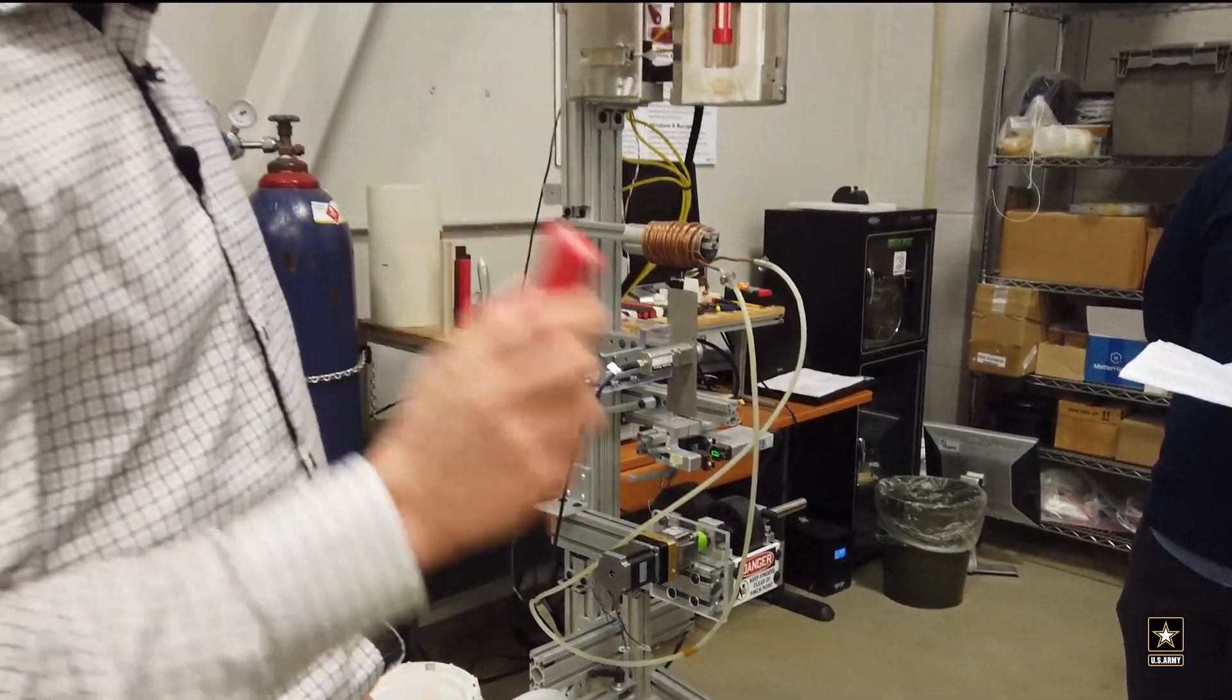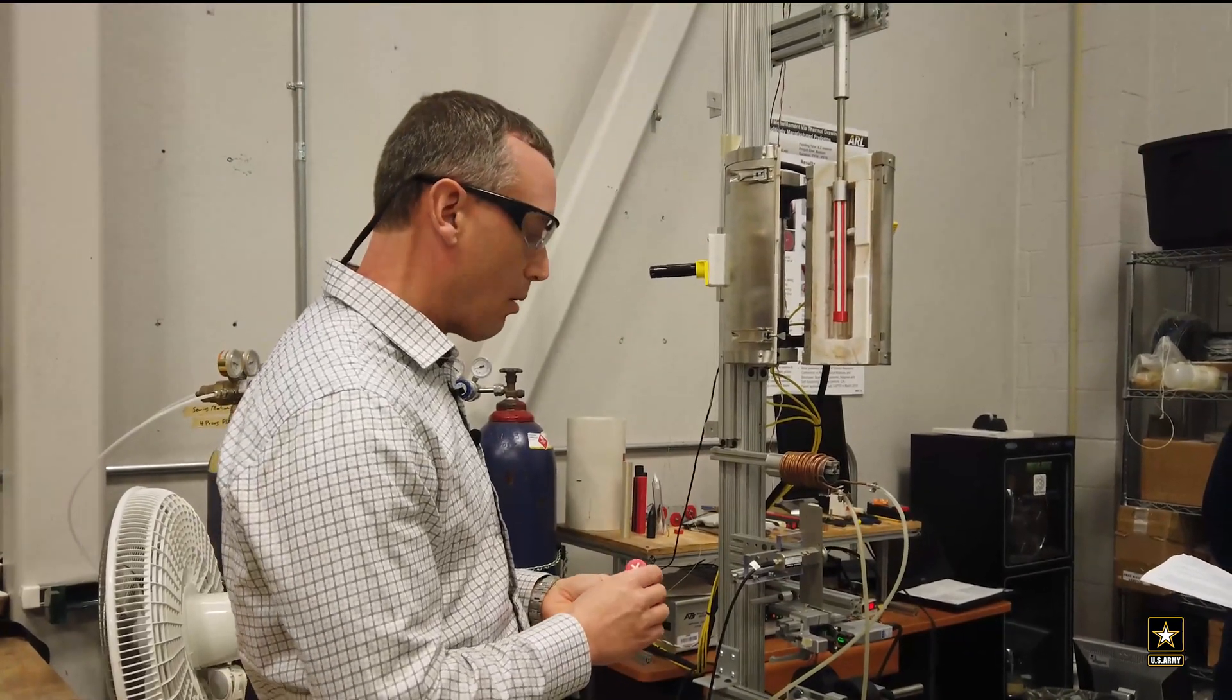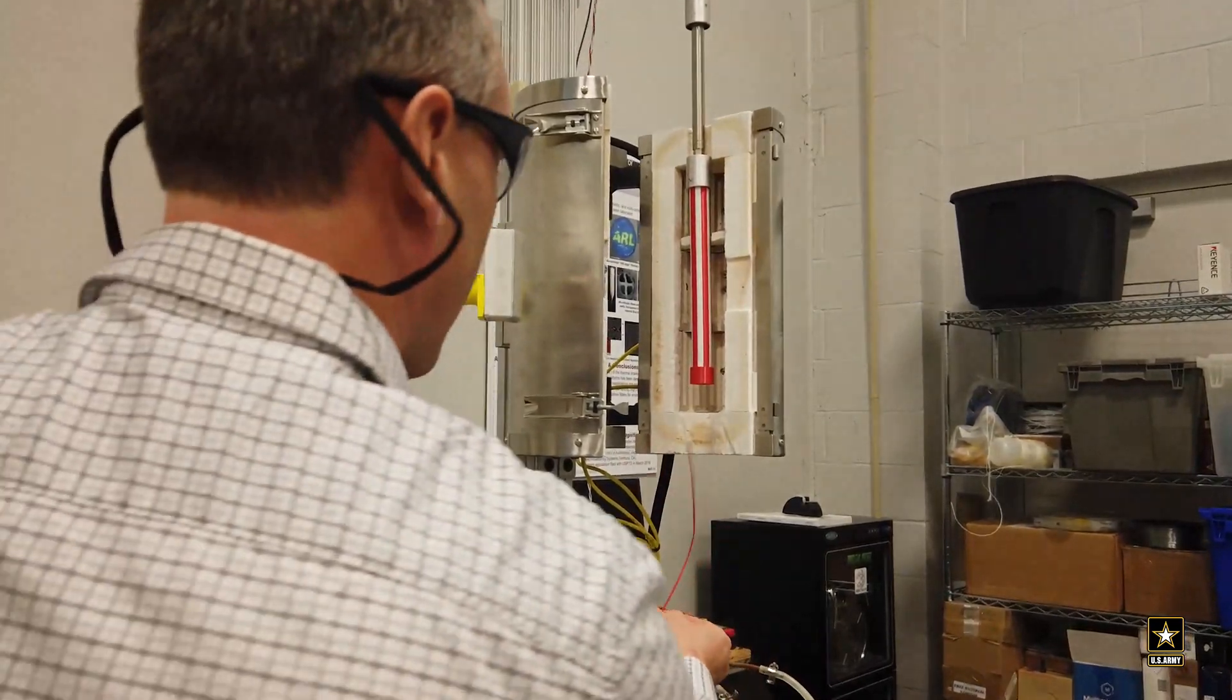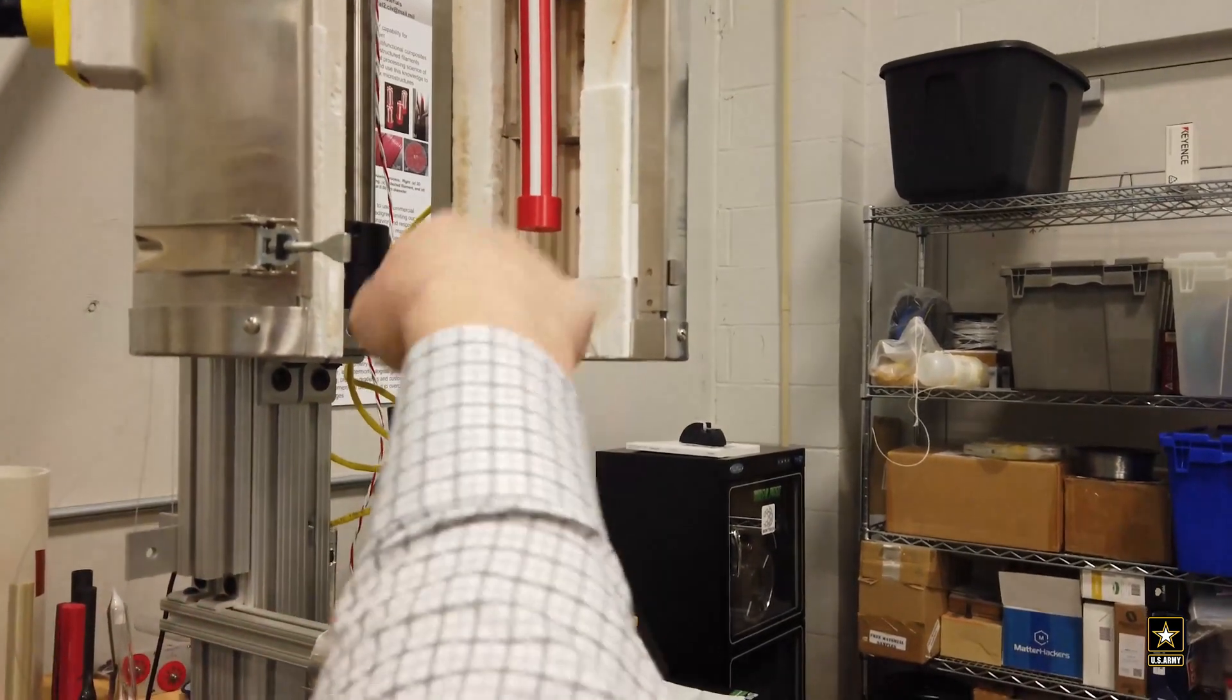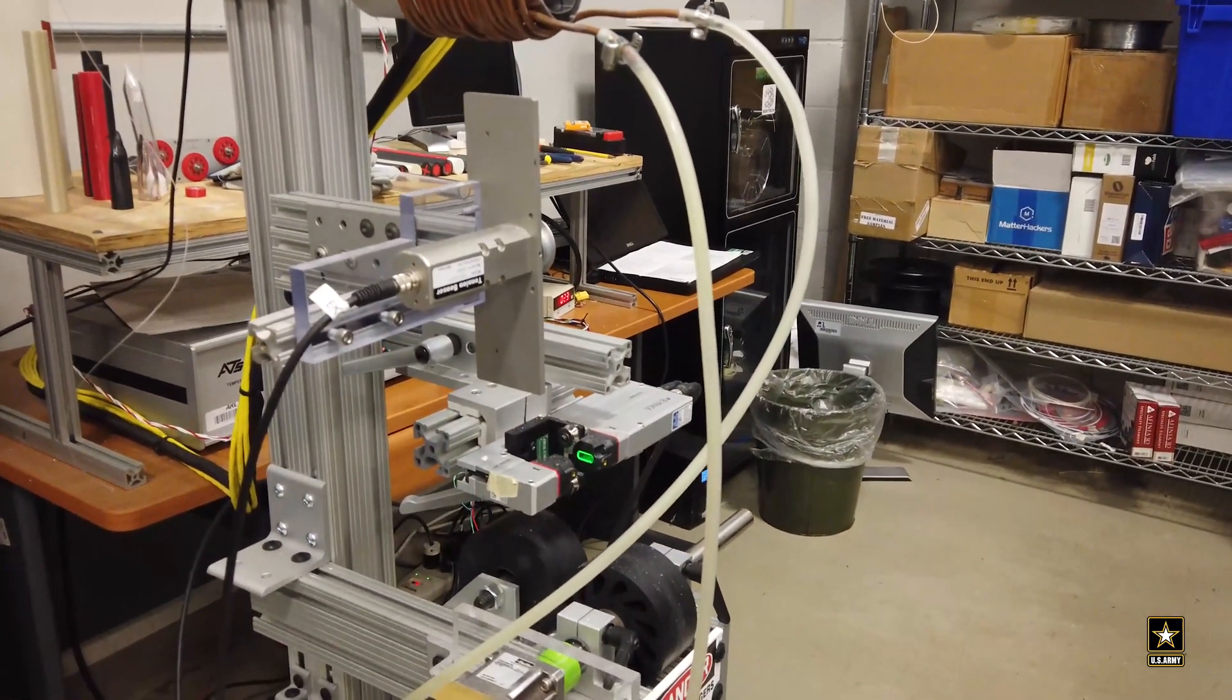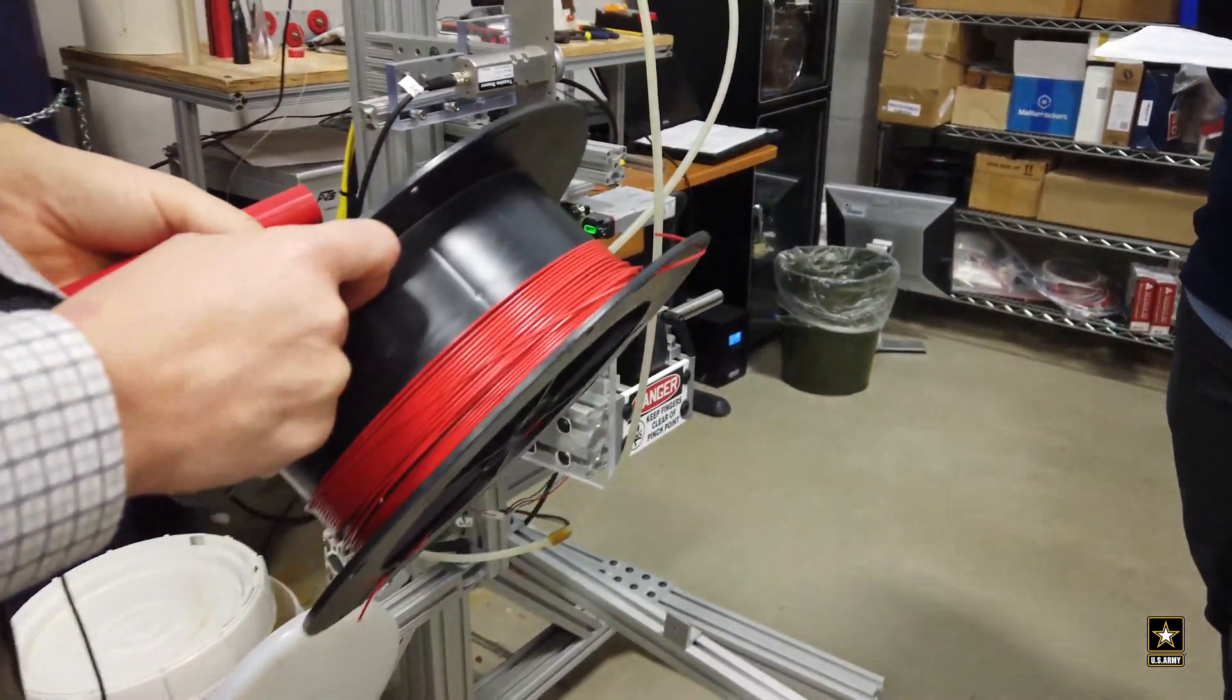Then we actually convert this back into filament. We use a thing here called a thermal draw tower that we built. And it starts producing filament that looks like this from that draw cone. That gets fed down through some diameter sensors, some tension sensors, there's a take-up reel. And at the bottom, once you get this process going, you can make a large spool of filament like this.